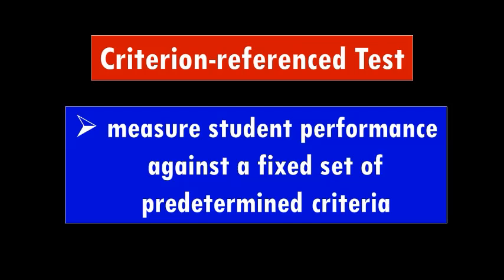The correct answer is a. Performance level on a specific skill. A criterion reference test is designed to measure student performance against a fixed set of predetermined criteria or learning standards — that is, concise written descriptions of what students are expected to know and be able to do at a specific stage of their education.